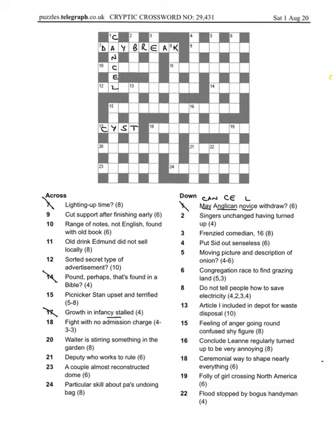And 14 across, pound perhaps that's found in a bible. Well it's not pounders in L this time, it's Ezra, I think the book of Ezra that's in the bible and Ezra Pound the poet. Picnic stricken upset, so it's five and eight, it's gonna be panic stricken. Nice anagram there, not too complicated.